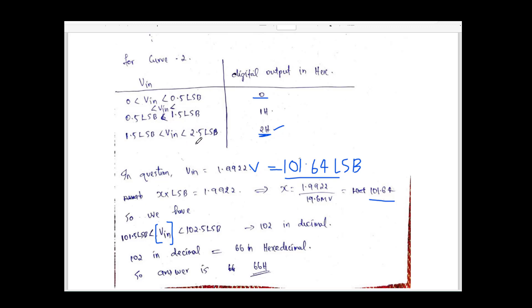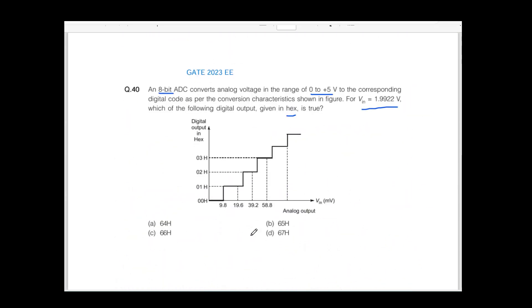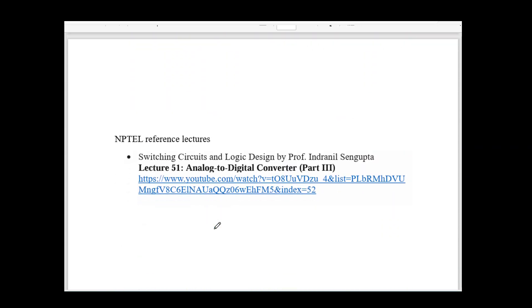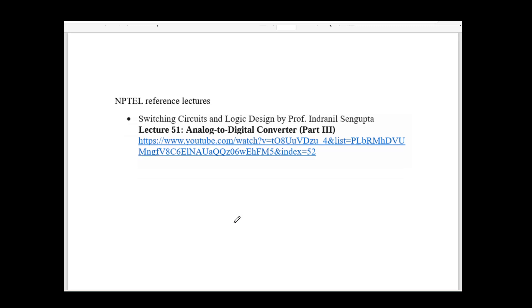If it is less than 102.5 LSB, the number of steps is 102. This number of steps is in decimal. In the question, we have to find the hexadecimal value. So 102 in decimal equals 66 in hexadecimal. Therefore, the answer is 66H, and option C is the correct answer. That's all about the answer. If you want to know more about digital converters, you can refer to the linked lecture. Thank you all.